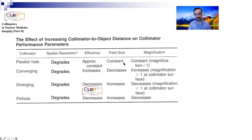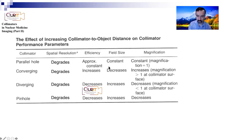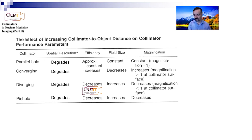The field size stays the same for parallel hole, but for converging, as you get farther away, you can image a smaller and smaller area - that's a disadvantage of converging. Diverging has the advantage that as you get further away, you're looking at a bigger picture and can image bigger objects.